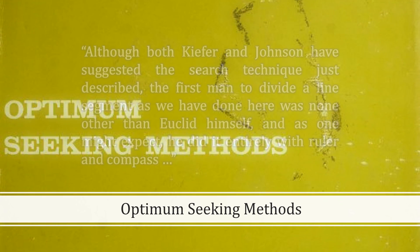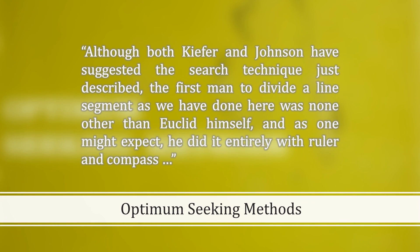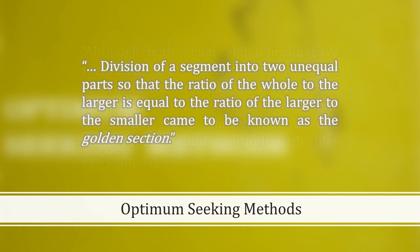Wilde again. Although both Kiefer and Johnson have suggested the search technique just described, the first man to divide a line segment as we have done here was none other than Euclid himself, and as one might expect, he did it entirely with ruler and compass. Division of a segment into two unequal parts so that the ratio of the whole to the larger is equal to the ratio of the larger to the smaller came to be known as the golden section.